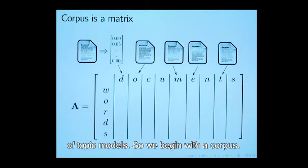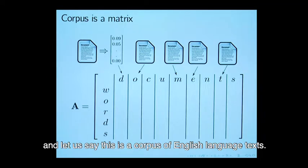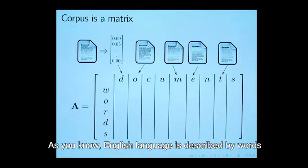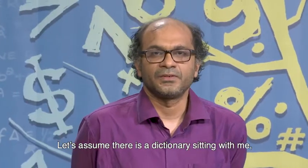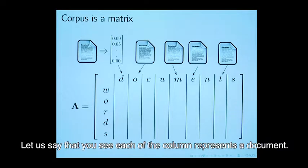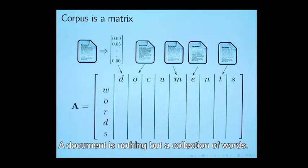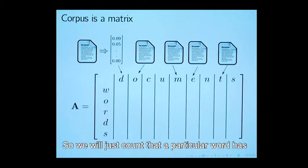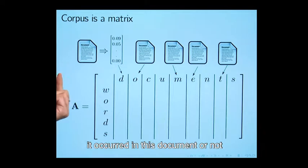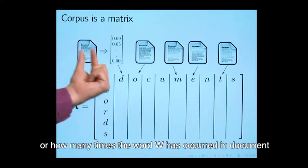We begin with a corpus. Corpus is nothing but a collection of documents. Let us say this is a corpus of English language texts. As you know English language is described by words. Let us assume there is a dictionary sitting with me and all words in a dictionary consists my vocabulary. Each of the columns represent a document. A document is nothing but a collection of words. We will just count that a particular word has occurred in this document or not, or how many times the word W has occurred in the document D.